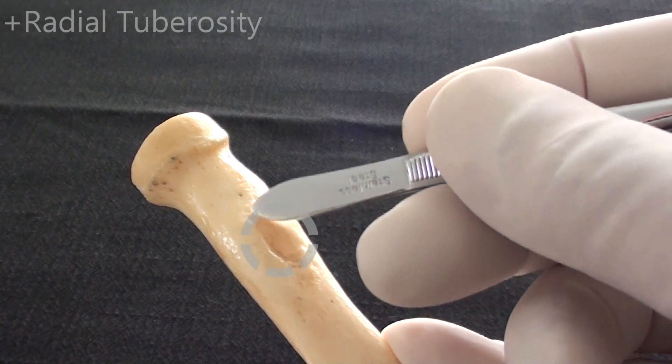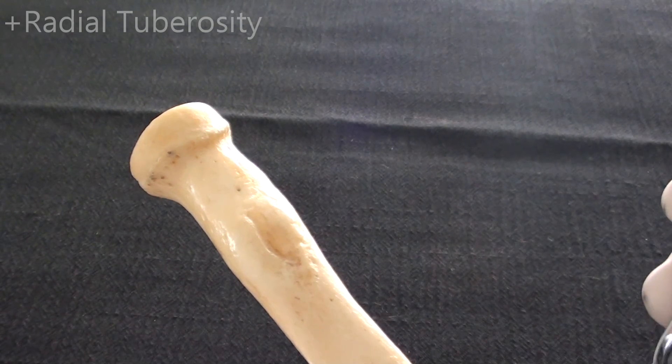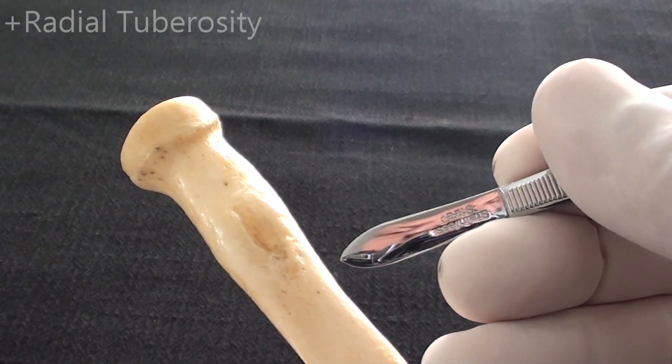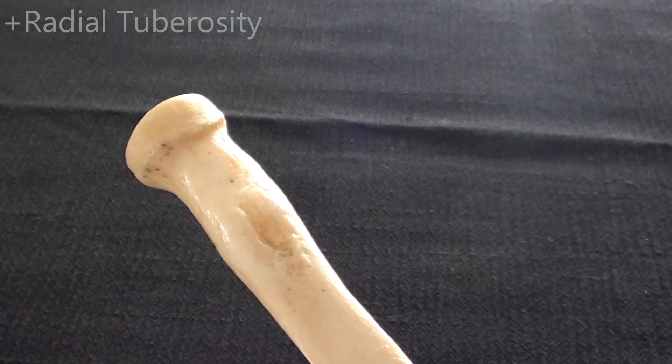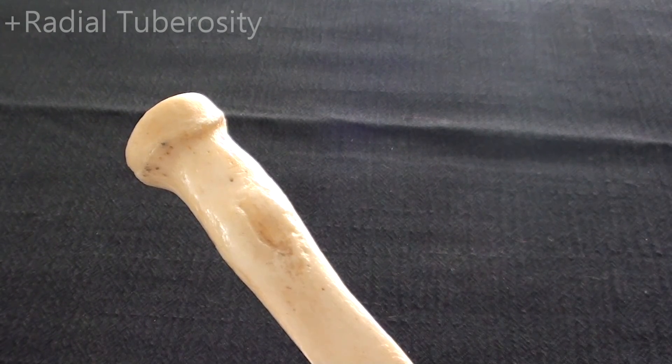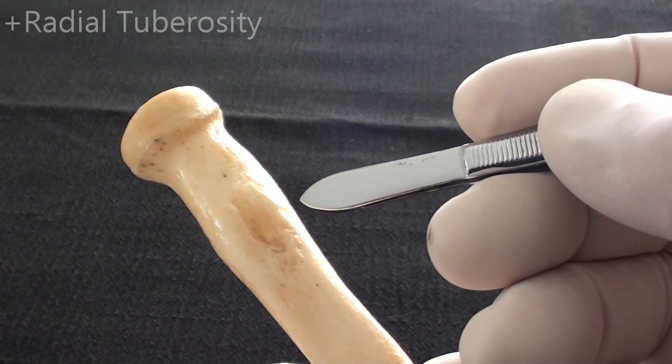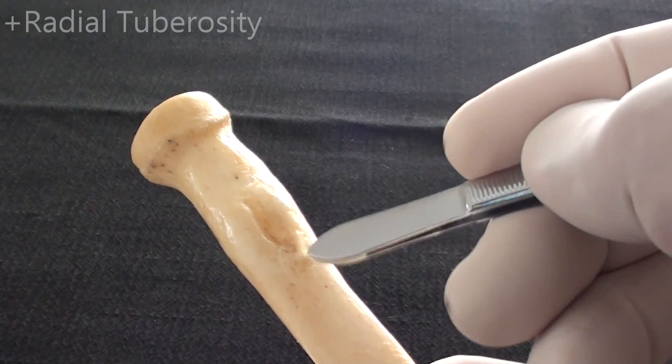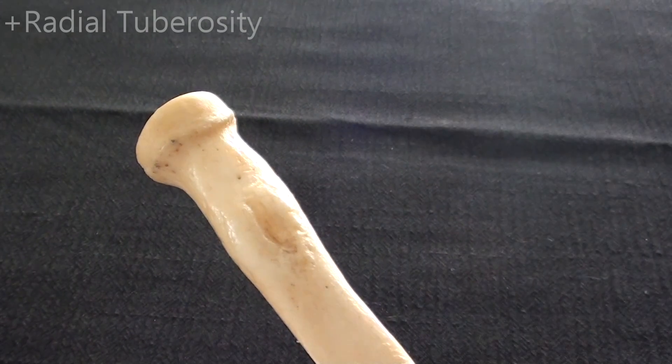The radial tuberosity is insertion point for the main tendon of the biceps brachii muscle, which we mentioned in the previous section about the ulna. Biceps brachii is a muscle which principally is going to be involved in supination of the forearm, and once it reaches the end point for supination, the rest of the bicipital contraction will be directed to assist the brachialis as a strong elbow flexor. This part of the bone is insertion point for the main tendon of the biceps brachii muscle, that is the radial tuberosity.